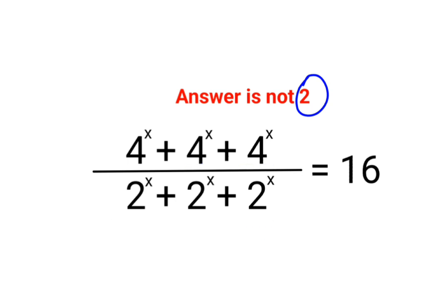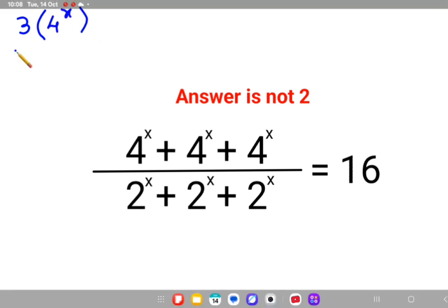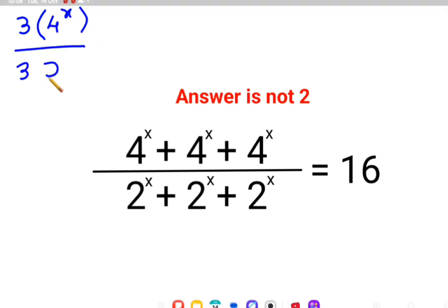Now when you have something like this, you should always start from something very basic. We have 4 plus 4 plus 4, so how many 4s we have? Three 4^x divided by three 2^x.